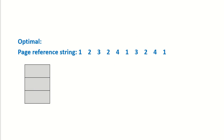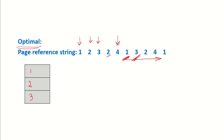Now let's see how many page faults we will have under the Optimal policy. Again, pages 1, 2, and 3 will be page faults. Then there is a reference to 2 which is a hit. Then a reference to 4 which is a page fault — we must decide which page to replace. Under Optimal, we replace the page that will not be used for the longest time in the future. Page 1 is going to be used very soon, page 3 is also going to be used soon, so page 2 is furthest away in the future and is replaced by 4.